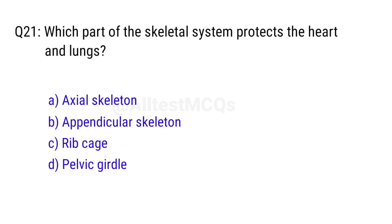Q21. Which part of the skeletal system protects the heart and the lungs? Right answer is option C, rib cage.